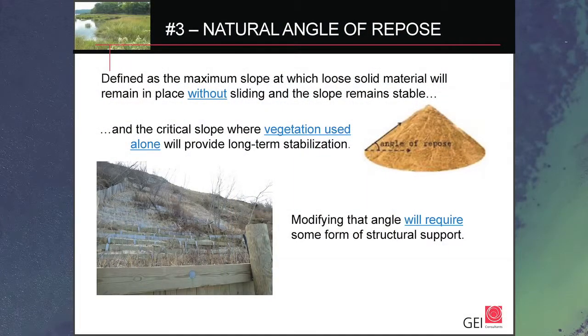You need to look at those things when designing your shoreline treatment because they could be potential failures if not considered. The third item: all soils have a natural angle of repose. If you take a bucket of sand and pour it out, it achieves a certain angle; clay can hold a different angle. If your damaged coastline area is steeper than the natural angle of repose, you're not going to get vegetation to stabilize that alone — you have to do something additional. Let the soils help dictate how you pick your treatment measure.